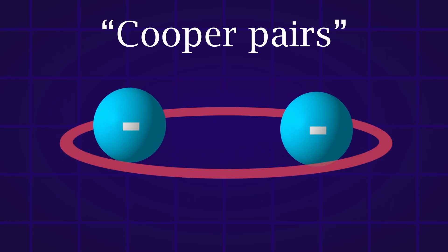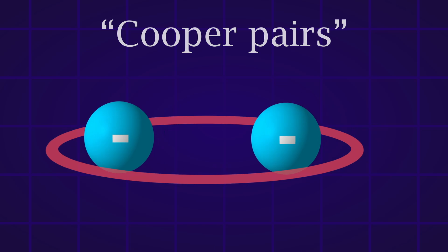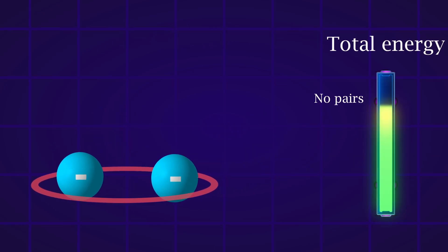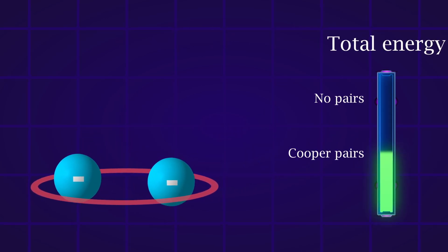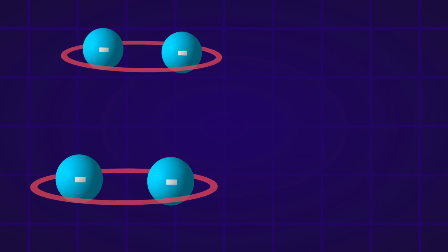Effectively making the electrons attract each other allowing them to form pairs. So-called Cooper pairs. And it turns out that forming these pairs is actually energetically favorable. So as we cool down below the critical temperature the electrons will all pair up. And this is where something interesting happens.